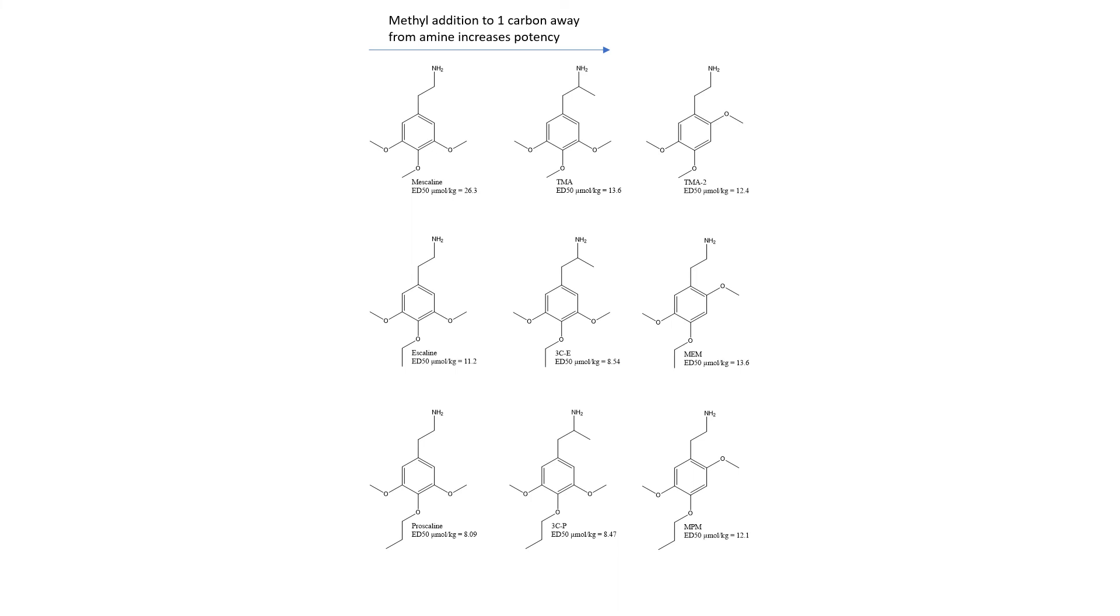Let's now look at what happens when we go from mescaline to escaline to proscaline, in which we are taking the fourth position methoxy group and elongating it to an ethoxy group in escaline and a propoxy group in proscaline. We see that the ED50 value of escaline is 11.2. This would be greater than a two-fold increase in potency of the drug going from mescaline to escaline. If we now compare mescaline to proscaline, we see that changing that fourth position methoxy group to a propoxy group goes from an ED50 value of 26.3 to 8.09. This is greater than a three-fold increase in potency of the drug. Thus, we can make the following trend statement: one carbon addition to the fourth methoxy position increases the potency of the drug.